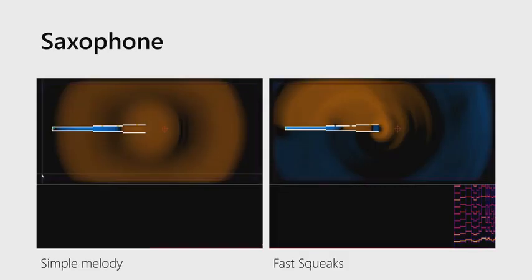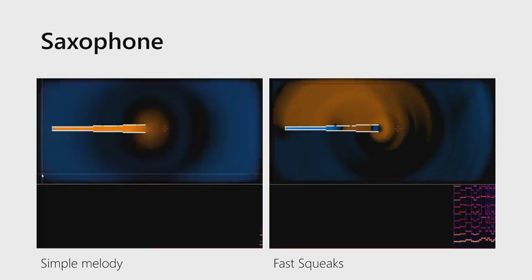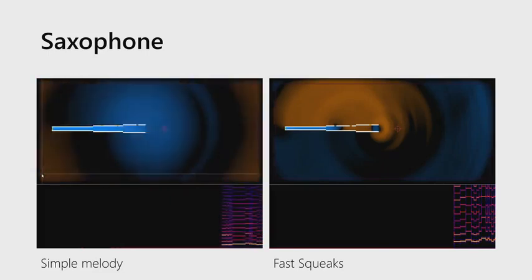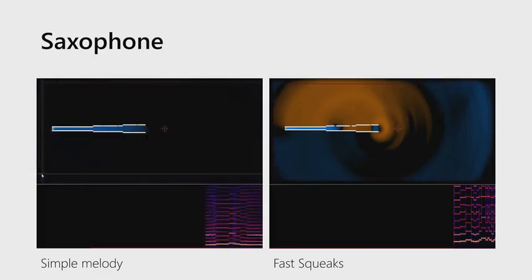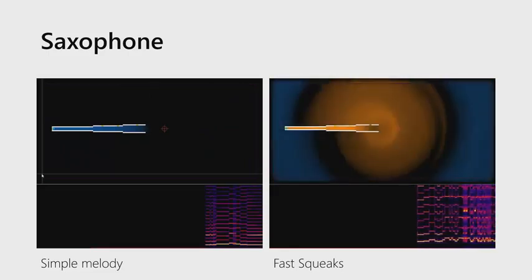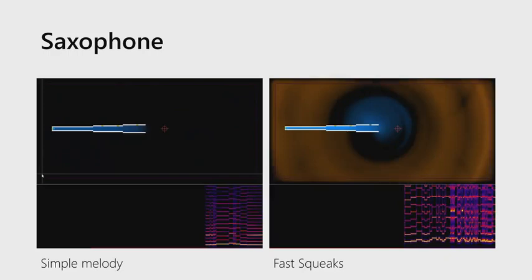If I take the exact same excitation mechanism and place it on a non-cylindrical or somewhat conical geometry instead of a cylindrical one, we produce a sort of saxophone or horn-like quality to the instrument. And just like with real saxophones, if you start playing fast interlocking passages, it can start making squeaks and honks. That's my favorite example.